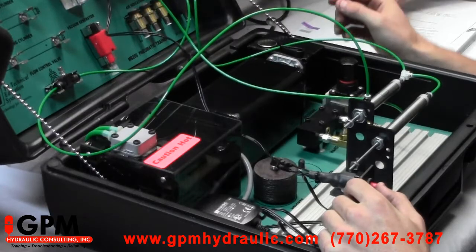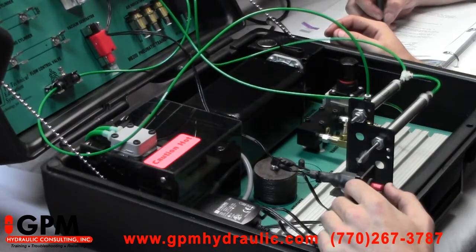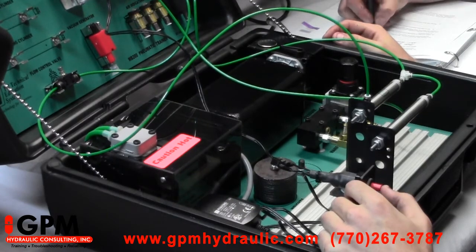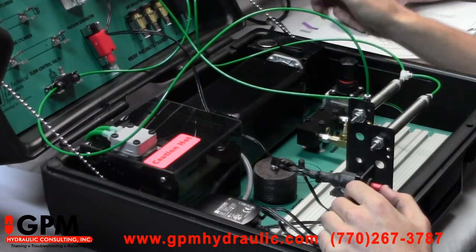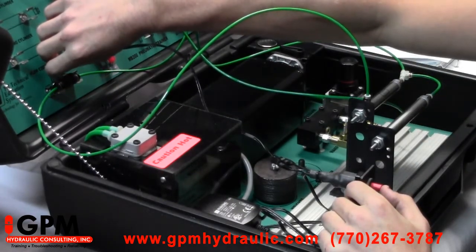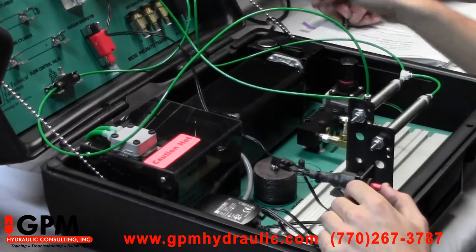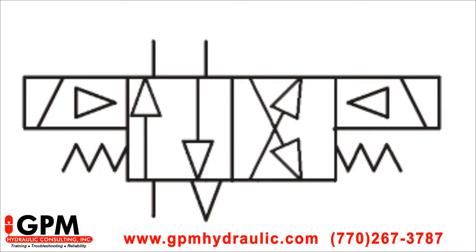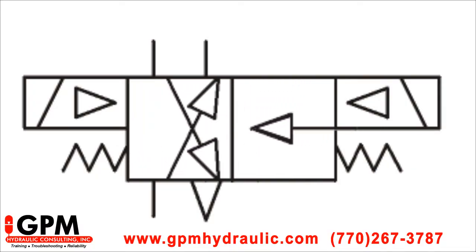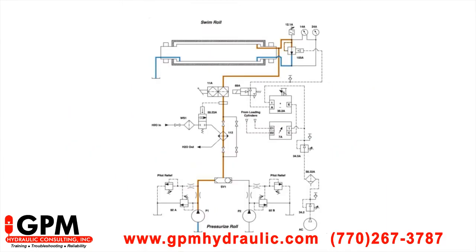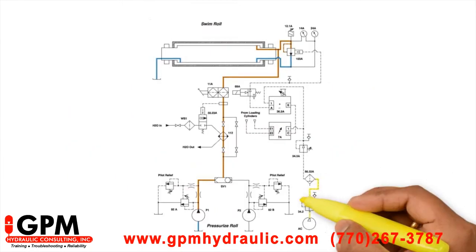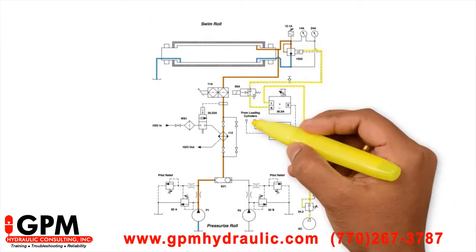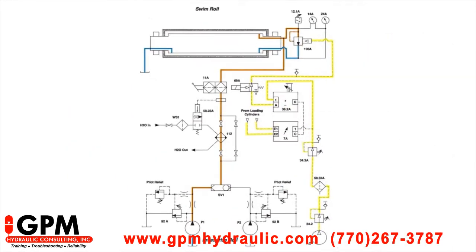Students then build complete circuits to understand component function and system flow using directional valves, including manual, solenoid operated, and air piloted. Students also learn the valve and other component symbols so that they can easily troubleshoot the system simply by tracing the flow on the pneumatic print.